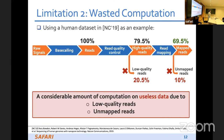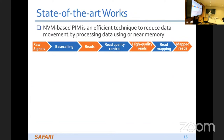Now let me talk about the state-of-the-art and NVM-based PIM. Non-volatile memory-based PIM is an efficient technique to reduce data movement by processing data using or near the memory. There are efforts to use processing-in-memory for base calling, specifically using NVM arrays to store neural network weights and performing vector-matrix multiplication in one cycle by applying voltages on word lines through a resistive circuit — this is very efficient since vector-matrix multiplication is the dominant operation in neural network applications.